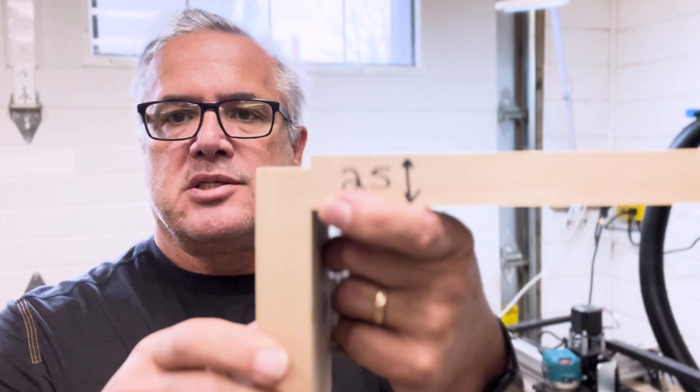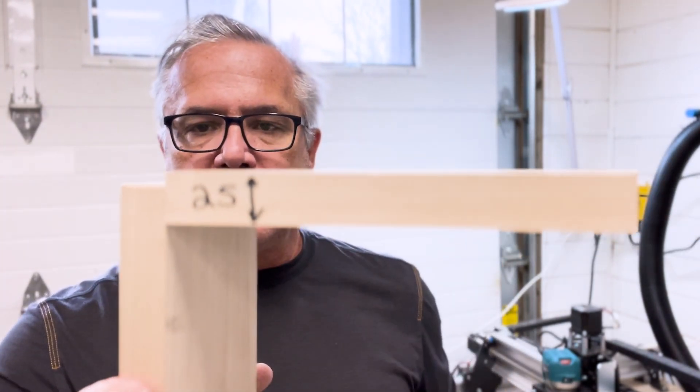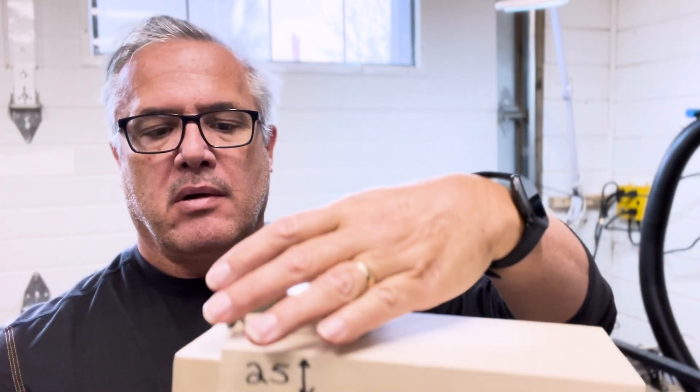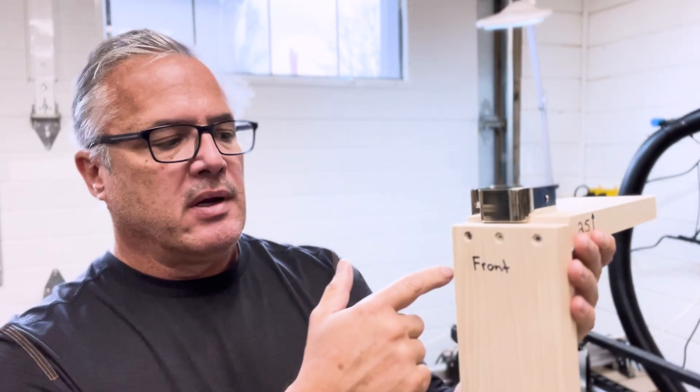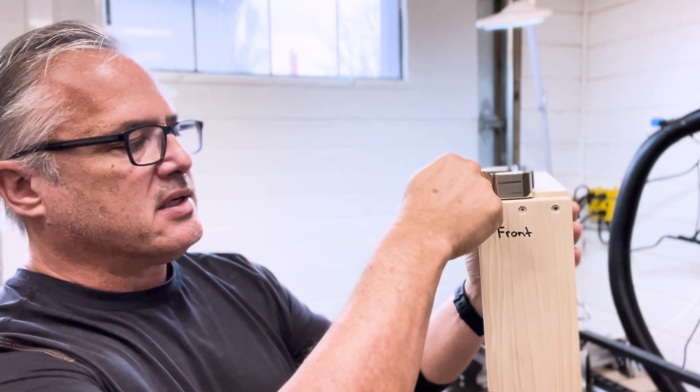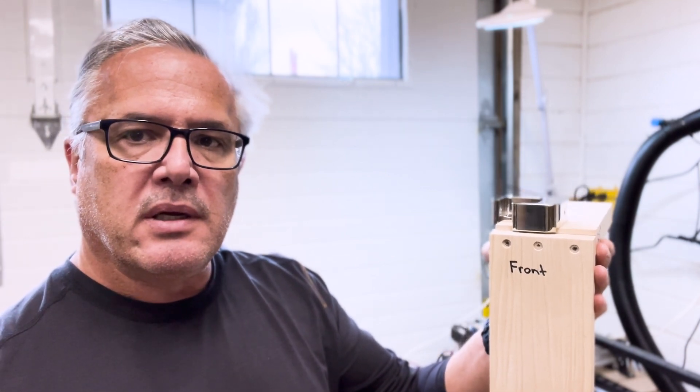Now if you notice on this jig, I've got a little lip here. This is to allow the touch plate to reference from when this is on the machine, the left side and the top of the part here. So now I'm able to find the origin of the component in the software and on the long mill to execute my cuts.